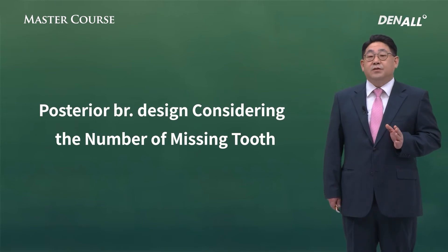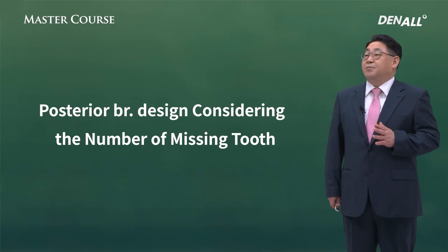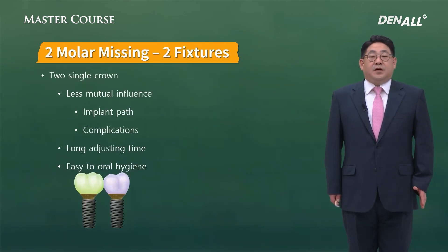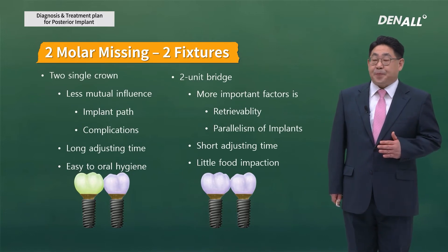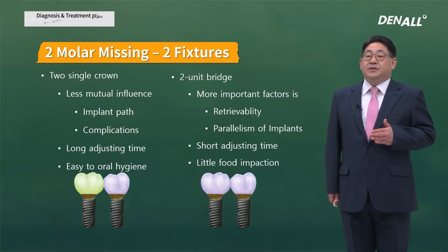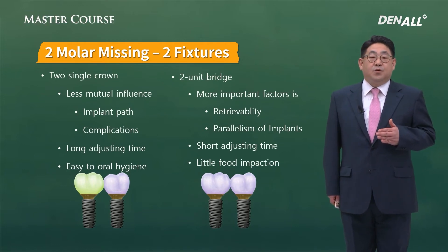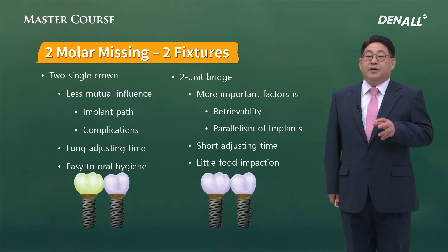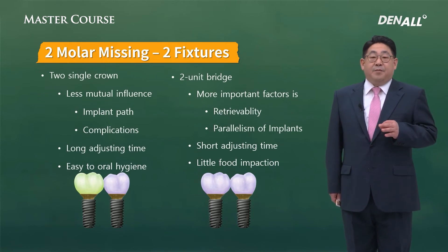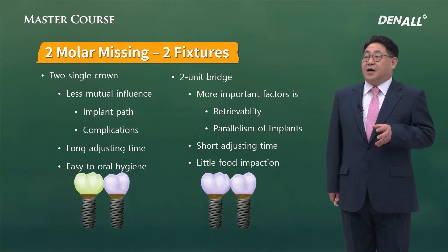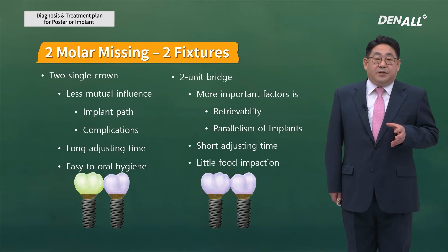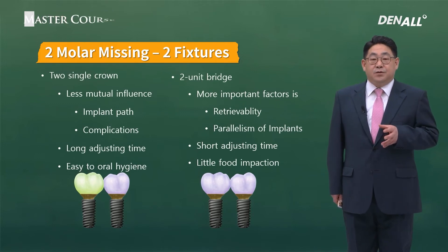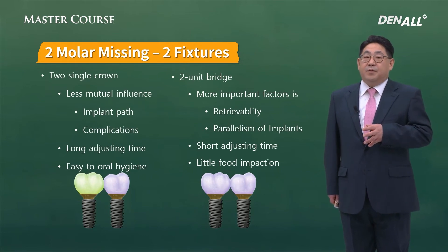Next, I'm going to talk about what kinds of designs are possible for multiple missing teeth and what needs to be considered. When two teeth are missing, you can make two single crowns or make a bridge-type prosthesis. If implant prostheses are provided separately, it is easy to retrieve them, providing more flexibility in terms of insertion path, and even if there is a complication you can treat it separately. It is easy to maintain oral hygiene. However, it may take more time in adjusting and delivering the prosthesis, and in terms of load distribution, it may be slightly unfavorable.